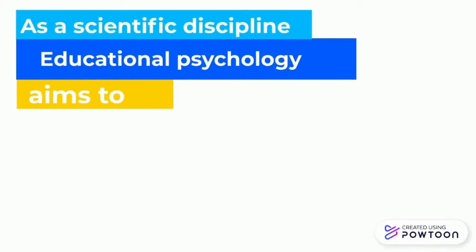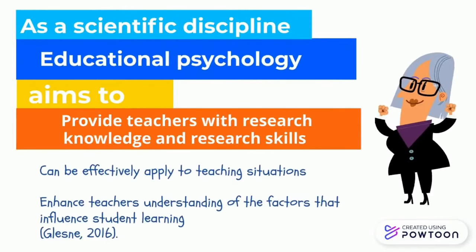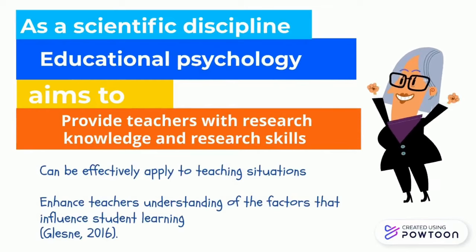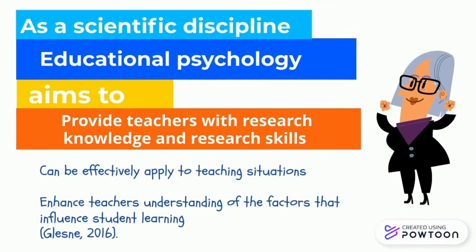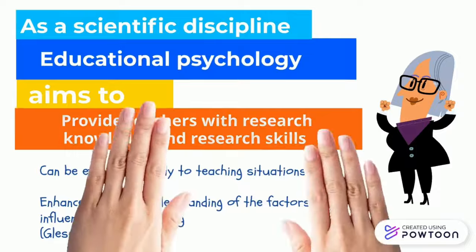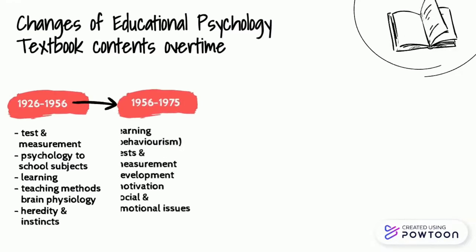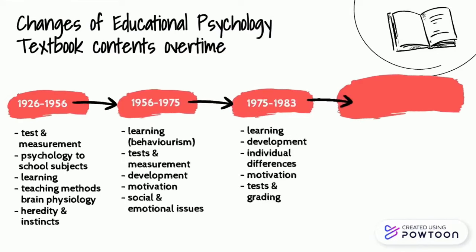As a scientific discipline, educational psychology aims to provide teachers with research knowledge that teachers can effectively apply to teaching situations, and with research skills that will enhance teachers' understanding of the factors that influence student learning. Over the past 100 years, the focus of textbooks in educational psychology has undergone some significant changes.